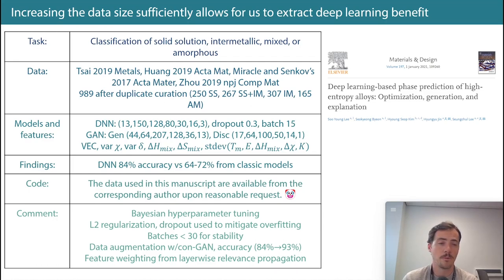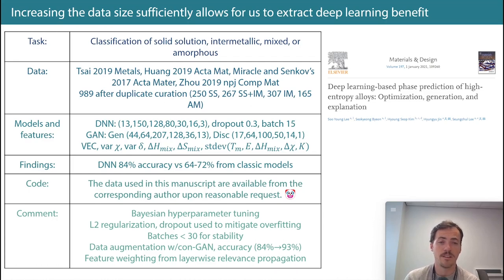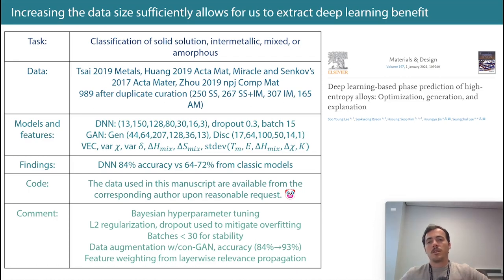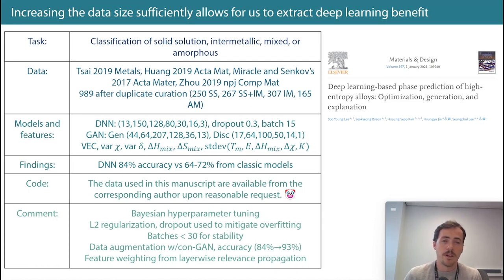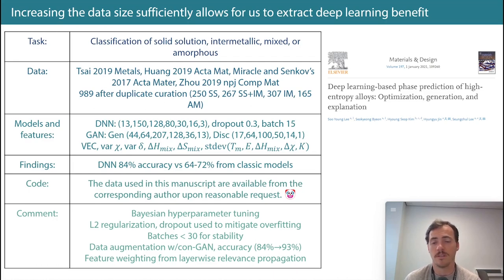Actual studies have tracked whether researchers respond to data requests, and the answer is they rarely do. So that is not FAIR data policy — you should just provide your data and code. Something positive they did: Bayesian hyperparameter tuning. Instead of grid or random search, Bayesian optimization is better and easy to use nowadays, so there's really no reason not to do it. They also did L2 regularization and dropout to help prevent overfitting.